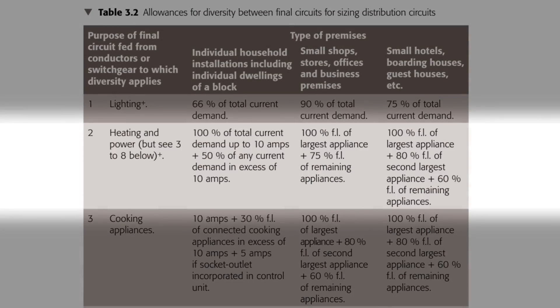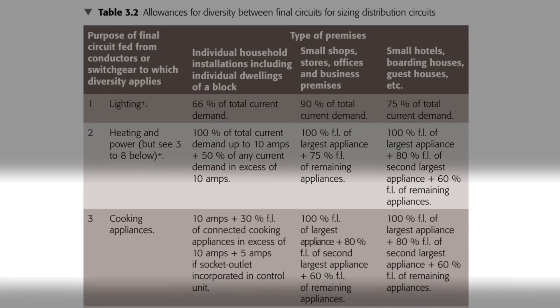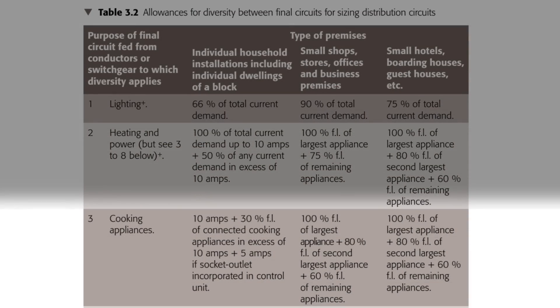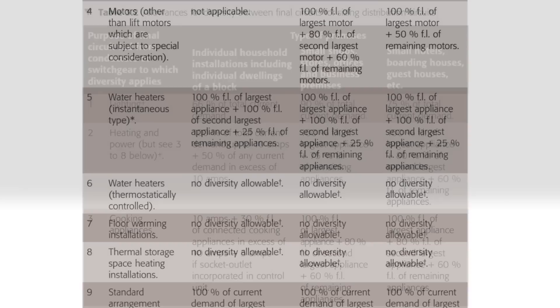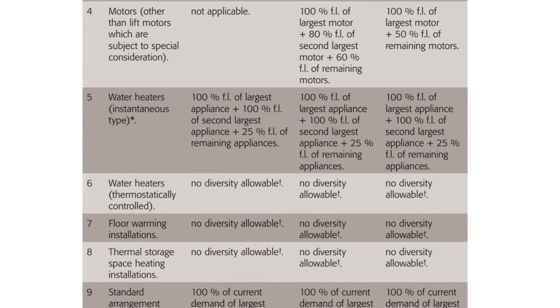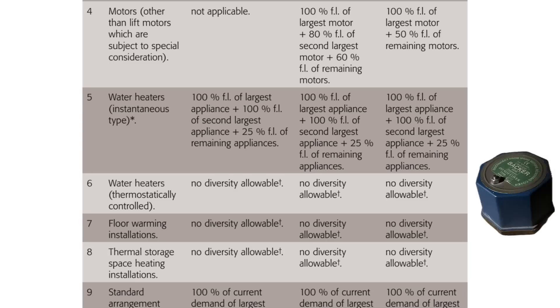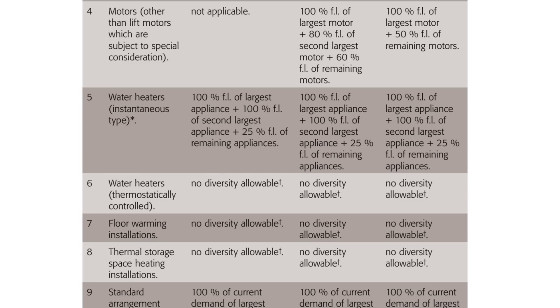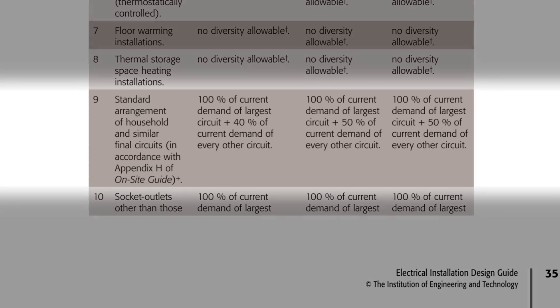Then we've got heating and power. For cooking appliances we use the same formula as earlier to get 18.7 amps. We've got no motors or instantaneous water heaters as there's no electric shower in this installation. We do have a thermostatically controlled water heater in the form of the immersion heater. There's no floor warming installation from row seven and no thermal storage space heating from row eight.